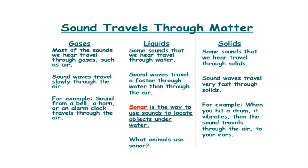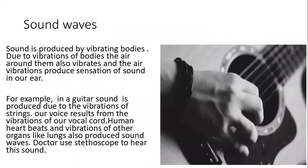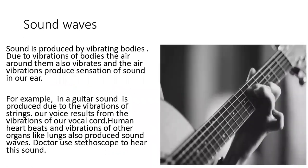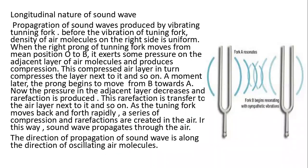In gases, the speed of sound is around 330 meters per second or nearby, depending upon the temperature, pressure, and density — ranging from 330 to 345. In liquid, molecules are closer compared to gases, so speed is more. In solid, molecules are most closely packed, so speed is much more. Sound waves are produced when something vibrates. Sound waves are longitudinal in nature and propagate in the form of compression and rarefaction.